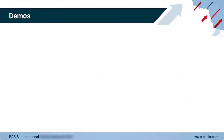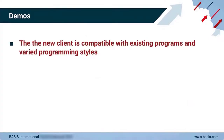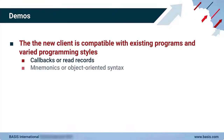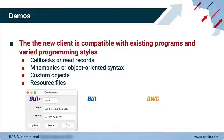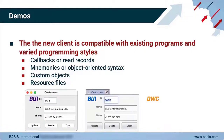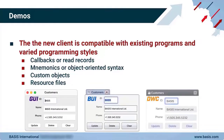The take-home point here is that the new client is compatible with existing programs and varied programming styles, regardless of whether they use callbacks or read records, mnemonics or object-oriented syntax, custom objects, resource files, and so on. The major difference is the appearance of the app in each of the clients, determined by the platform in GUI, the Basis Default CSS in BUI, and the CSS Custom Properties in the Dynamic Web Client. Both programs run without modifications in all three clients, including the new Dynamic Web Client.